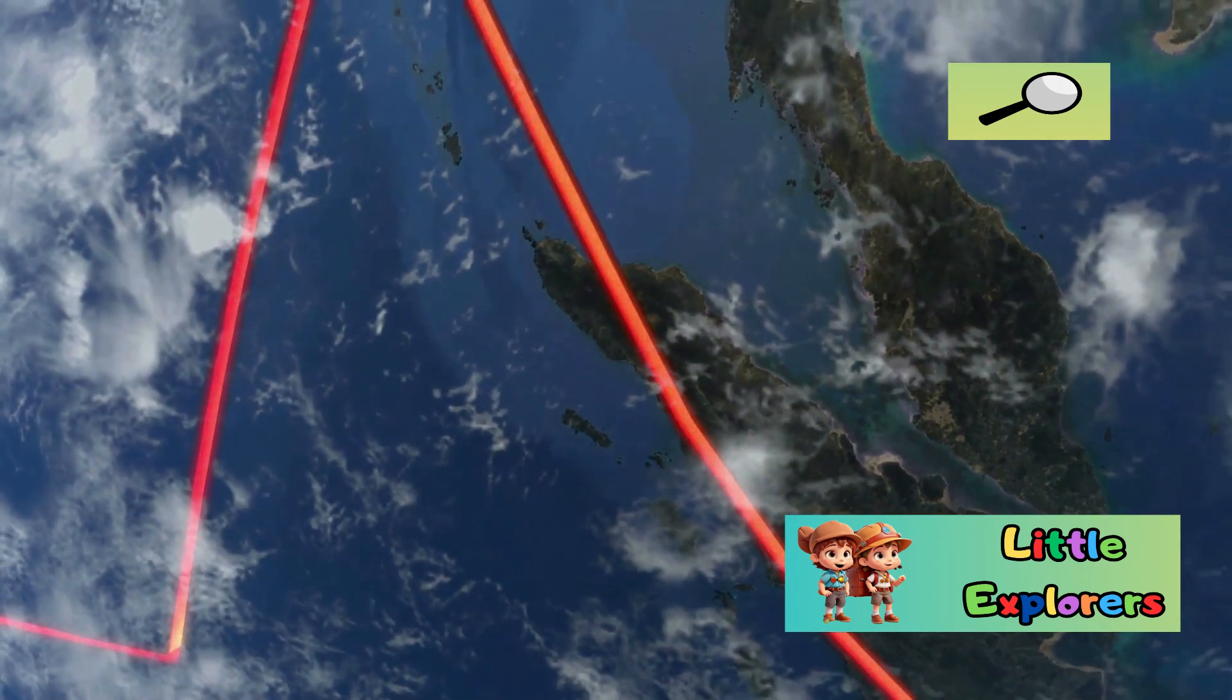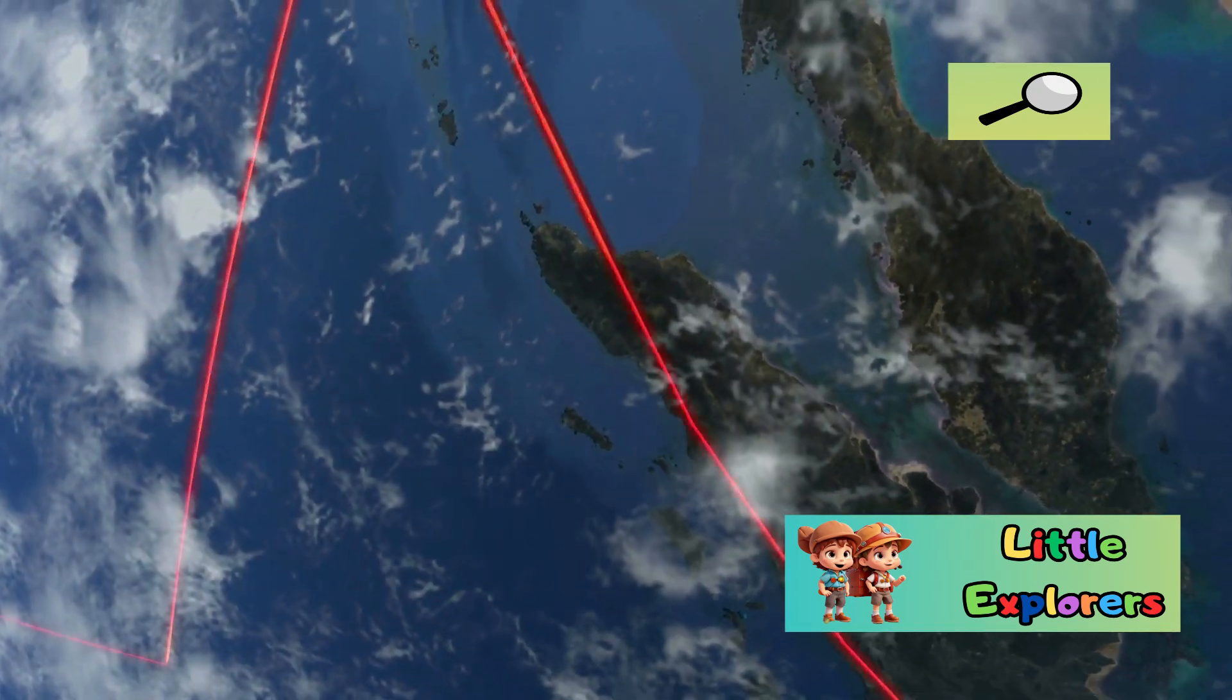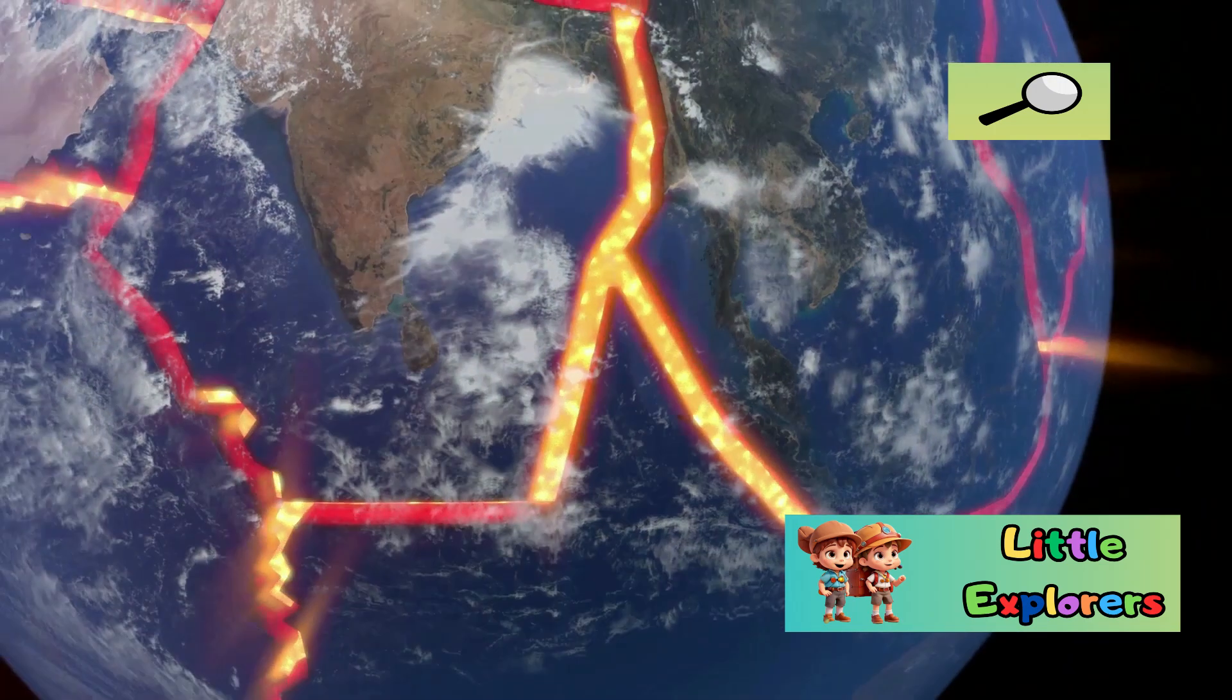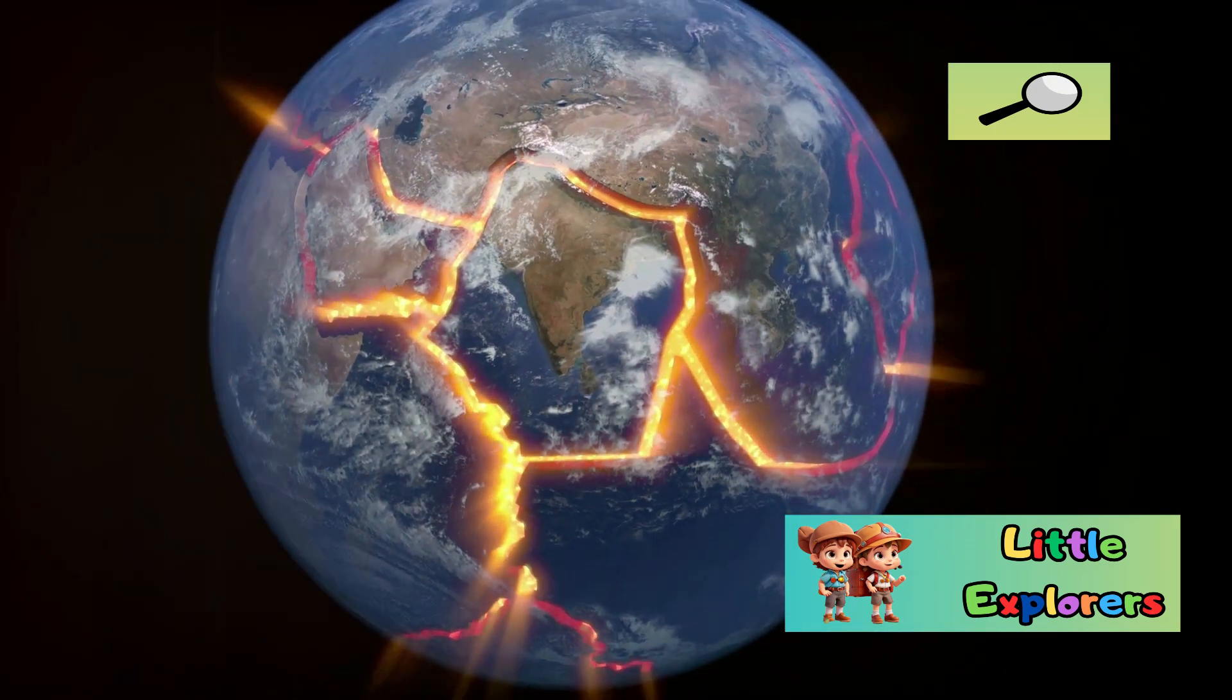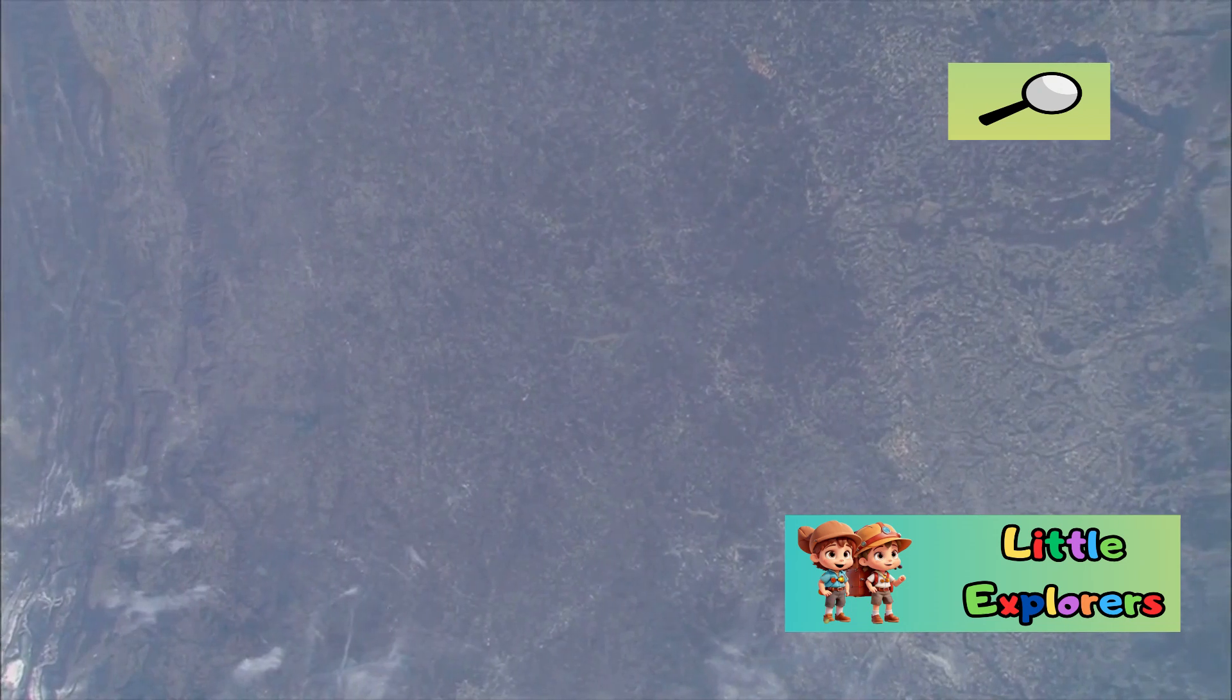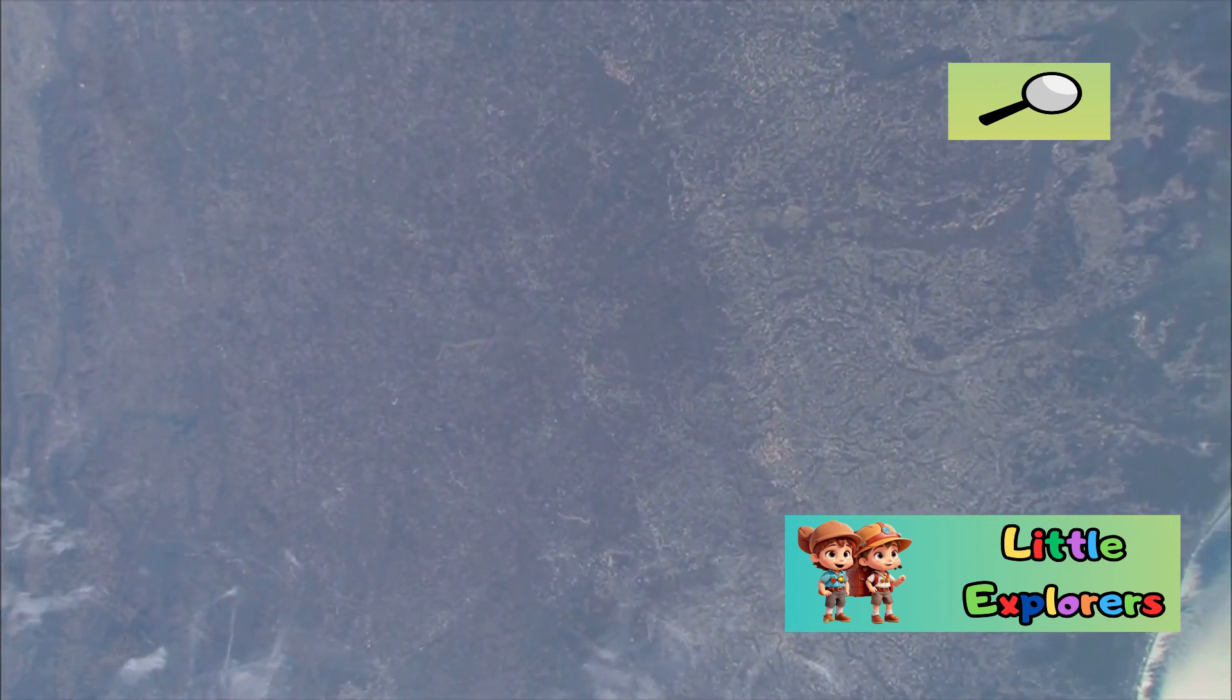The Earth's crust is divided into several large and small plates that float on the semi-fluid mantle below. Plate tectonics is like a giant jigsaw puzzle, with Earth's crust broken into plates that constantly move and interact. These interactions can cause earthquakes, volcanic eruptions, and the formation of mountain ranges. This movement creates mountains, volcanoes, and earthquakes, shaping our planet's surface over millions of years. The Himalayas, for example, were formed by the collision of the Indian and Eurasian plates.